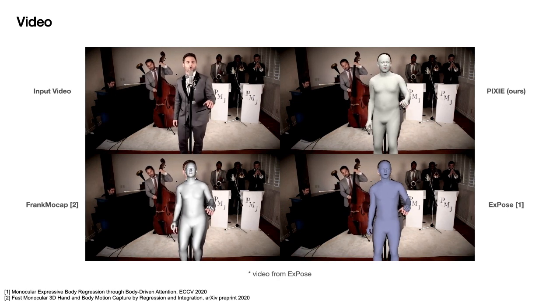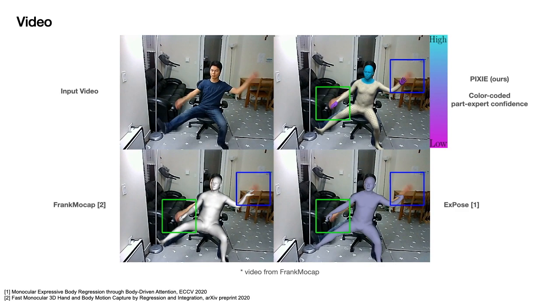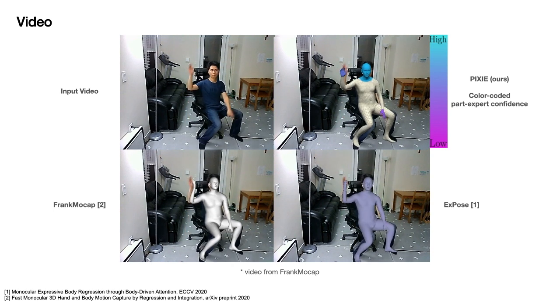For example, when the hand is blurry, PIXI still predicts a plausible wrist pose, instead of an unnatural twist. Note that there is no temporal post-processing. All methods are applied independently per frame.